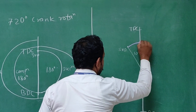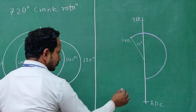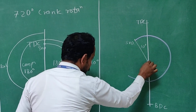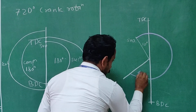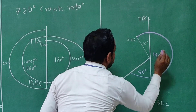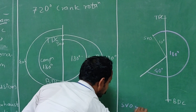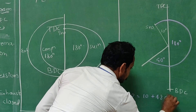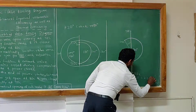So this suction valve will be open. Then, as in the theoretical closing, there is 180 degrees. Further, it will keep open for the next 40 degrees. So if you see the entire opening of the suction valve in the actual diagram, the suction valve remains open for 10 plus 180 plus 40, that is around 230 degrees crank rotation.